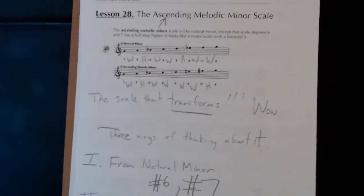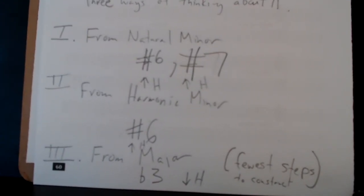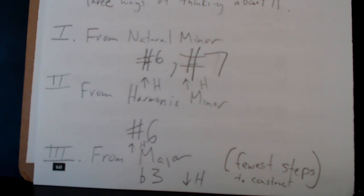There are actually three ways of thinking about it — I don't care how you get to the right answer as long as you get to the right answer. The three ways come from the three scales we already know. From natural minor, you're going to raise the sixth degree and raise the seventh degree. If you raise both the sixth and the seventh scale degree from your natural minor scale — for example, raising A-flat to A and B-flat to B — you arrive at the ascending melodic minor scale.